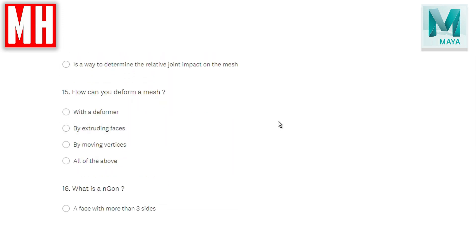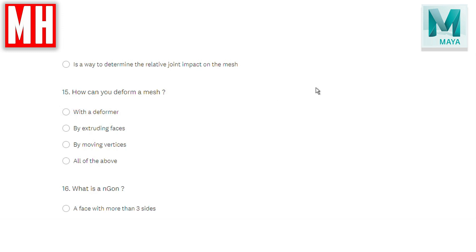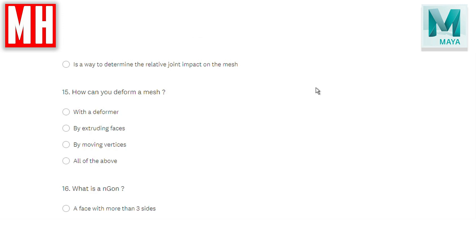Question number fifteen: how can you deform a mesh — with a deformer, by extruding faces, by moving vertices, or all of the above? The correct answer is D — all of the above. You can deform with a deformer if you have enough subdivision, but if you extrude a face or move a vertex, you're deforming the shape as well. So all of the above.